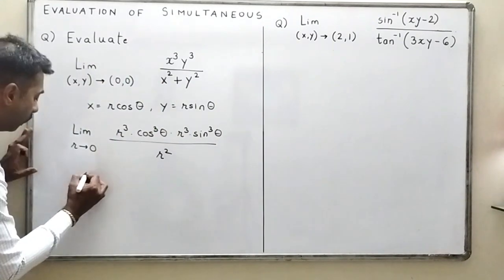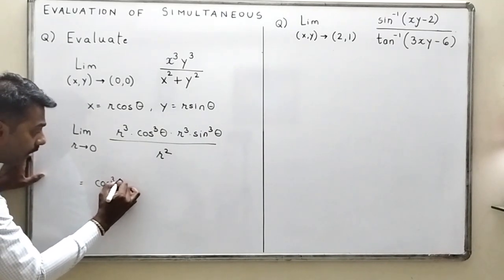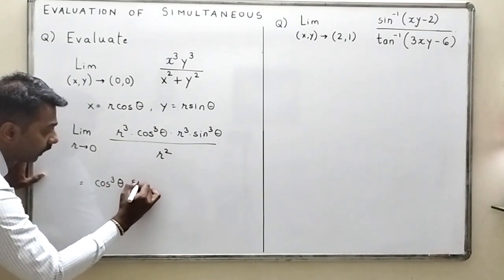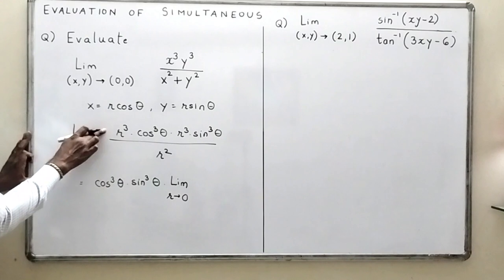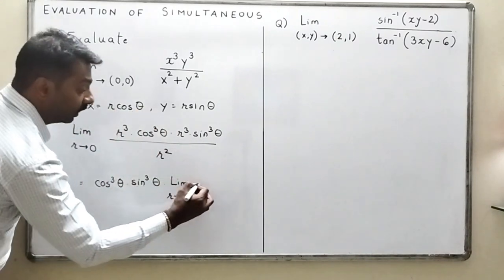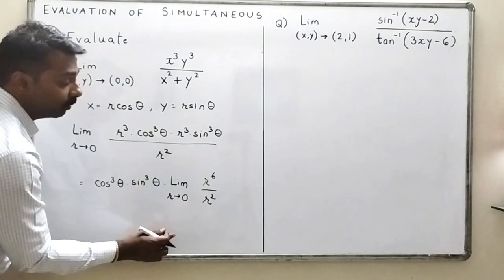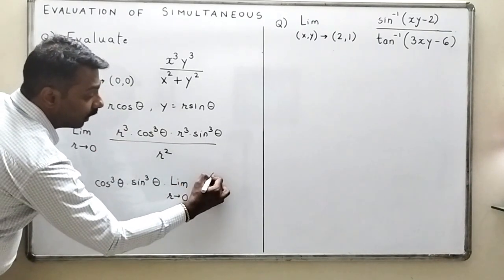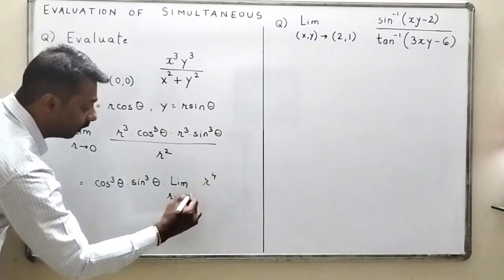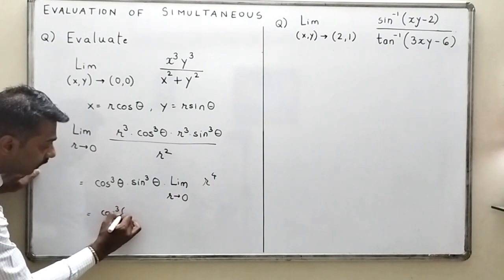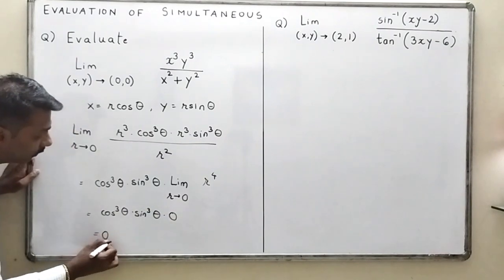cos³θ sin³θ has nothing to do with the limit, so it comes outside. Inside the limit we have r³ · r³ = r⁶ divided by r², which gives r⁴. The limit as r → 0 of r⁴ is 0. So we have cos³θ · sin³θ · 0 = 0, and the limit equals 0.